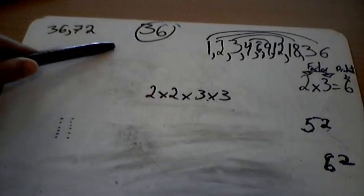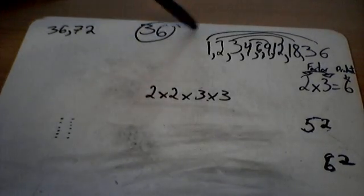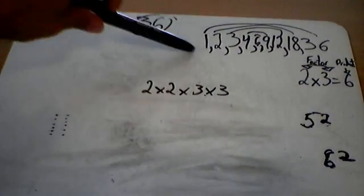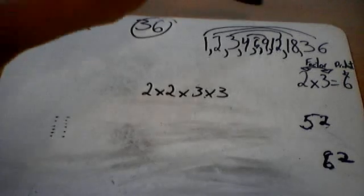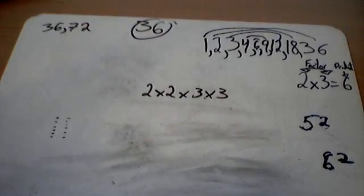Today I'm going to talk about math. So, this is the factor rainbow of 36: 1 times 36, 2 times 18, 3 times 12, 4 times 9, 6 by 6.